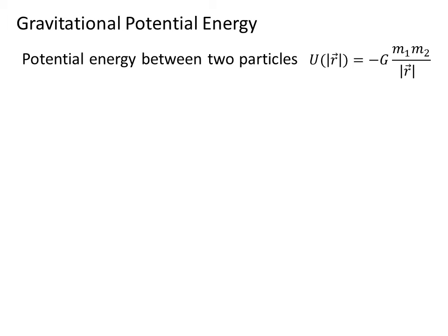And this is equal to minus G times the product of the two masses of the particles, divided by the separation of the particles. Notice the separation is not squared in this case for the potential energy, as opposed to the force.